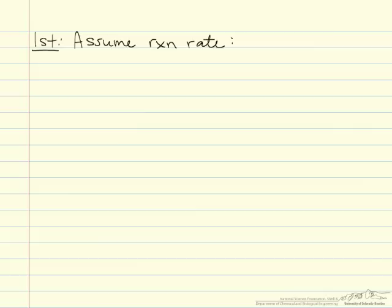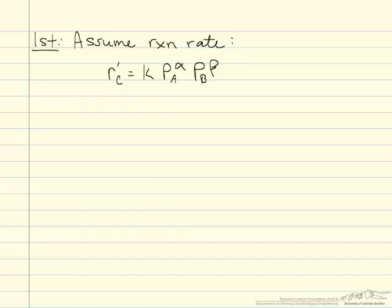Our first step is to assume a reaction rate law to help us figure out these factors. We can assume that the rate of appearance of C is equal to the reaction constant K times the partial pressure of A to the alpha times the partial pressure of B to the beta. We're using partial pressures here because that's the data we were given.